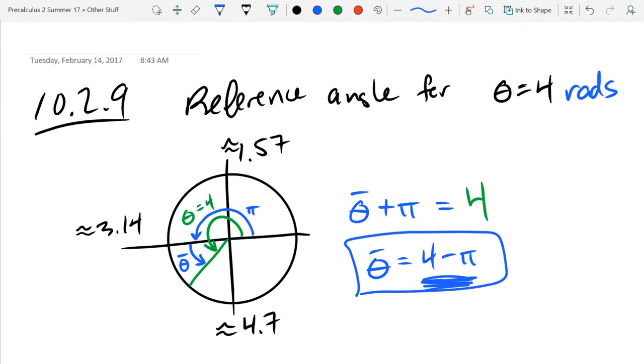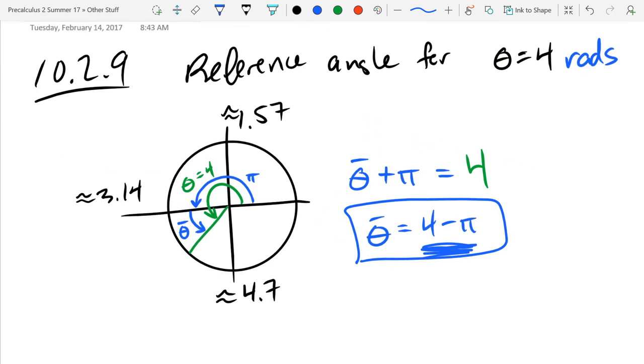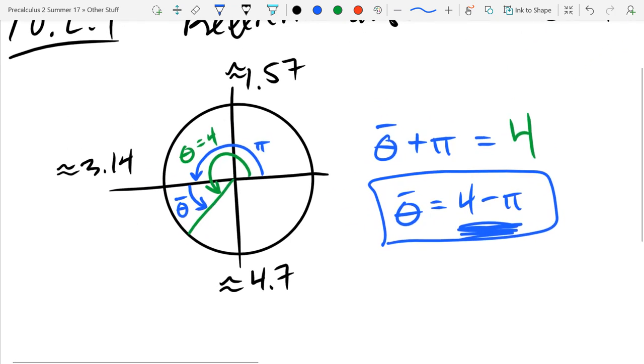Remember there's an invisible radians there when it does not say degrees. If you have another number, for example 5, 5 would be somewhere right there and I would play the same game. Here would be my new reference angle.